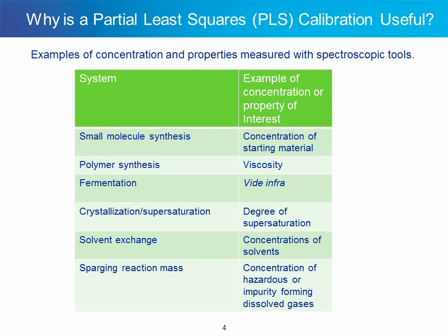What are some of the concentrations or properties of interest that one might trend using a spectroscopic tool? In a small molecule synthesis system, you might look for concentration of starting material. In polymer synthesis, viscosity. In crystallization, the degree of supersaturation. In solvent exchange, the concentration of solvents. In sparging the reaction mass, the concentration of hazardous gases or impurity-forming dissolved gases. Fermentation will be discussed further.